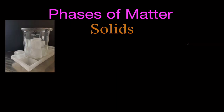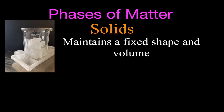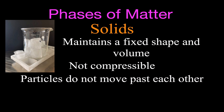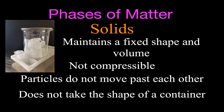What is a solid? You can see that a solid maintains a fixed shape — the shape doesn't change — and the volume does not change. It's not compressible. The particles are not moving past each other; they are vibrating, but they're not moving past each other. They're in a fixed pattern — a fixed crystal structure a lot of times — and therefore, a solid does not take the shape of its container.